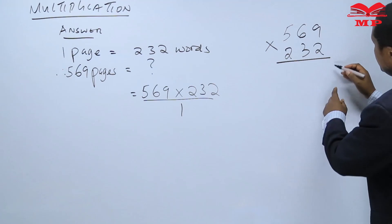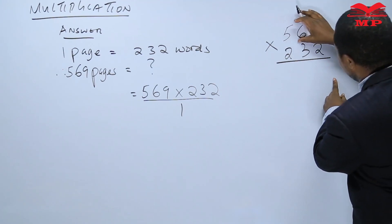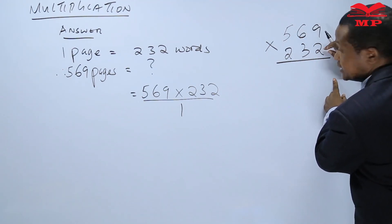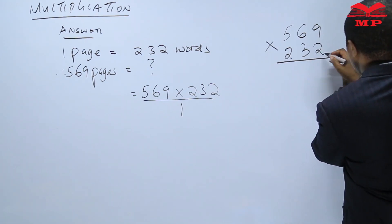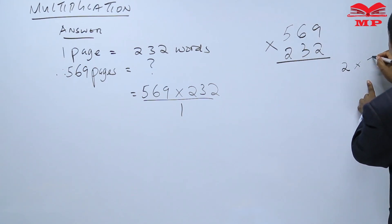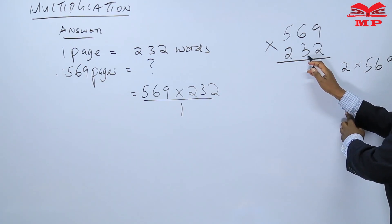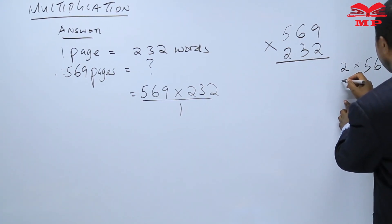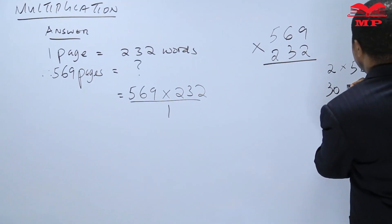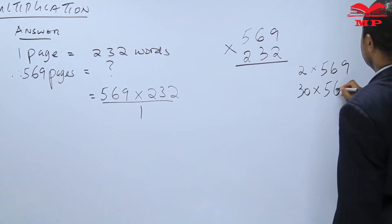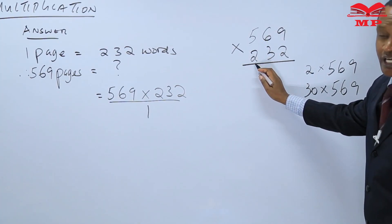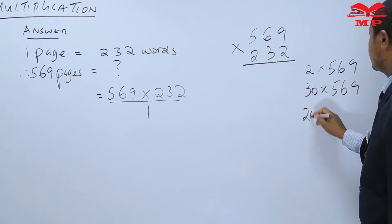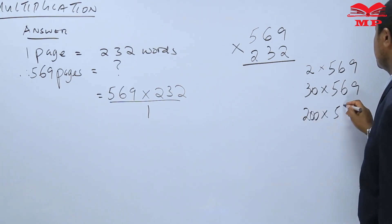As usual, we multiply the first number with every digit of the second number. To start with, we will have 2 times 569. Then we will multiply by 3, and this 3 is in the place value of tens, so it will be 30 times 569, followed by 2 which is in the place value of hundreds, so we will have 200 times 569.